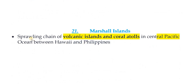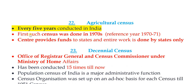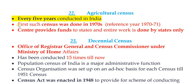The Marshall Islands are a sprawling chain of volcanic islands and coral atolls in the Central Pacific Ocean, between Hawaii and the Philippines. The Agricultural Census is conducted every five years in India. The first census was done in the 1970s, not from independence. The central government provides funds to states, and the entire work is carried out by the states only.